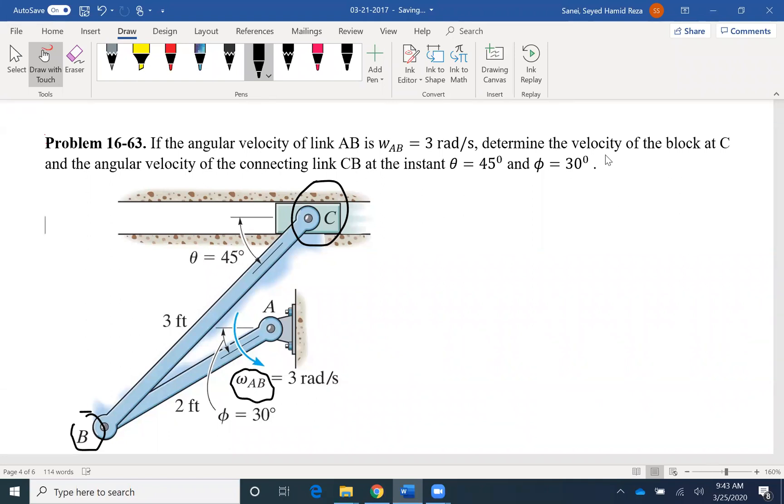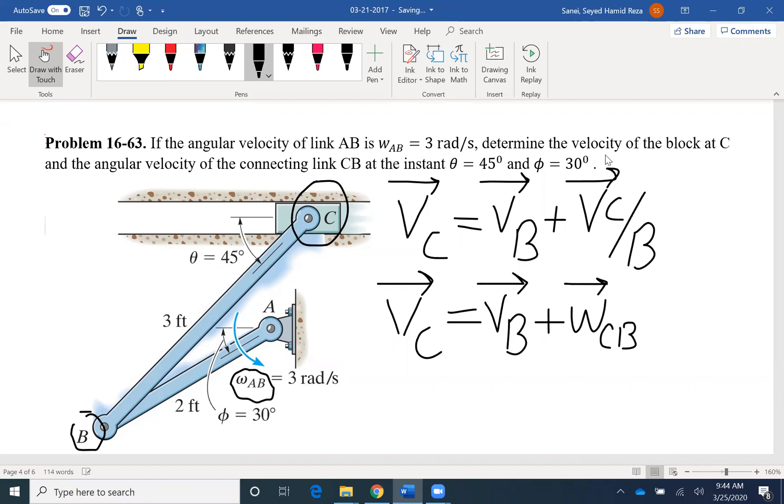So velocity at C is equal to velocity at B plus velocity of C with respect to B. VCB is the rotation component. Both point C and B are on the same rigid body. So VC equals VB plus omega CB cross RCB.